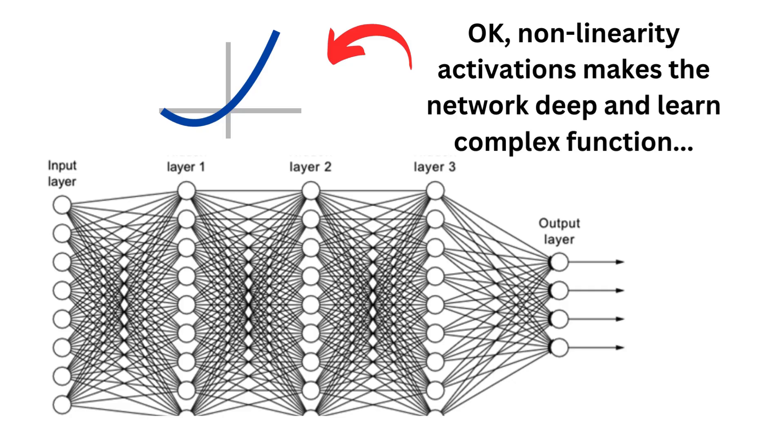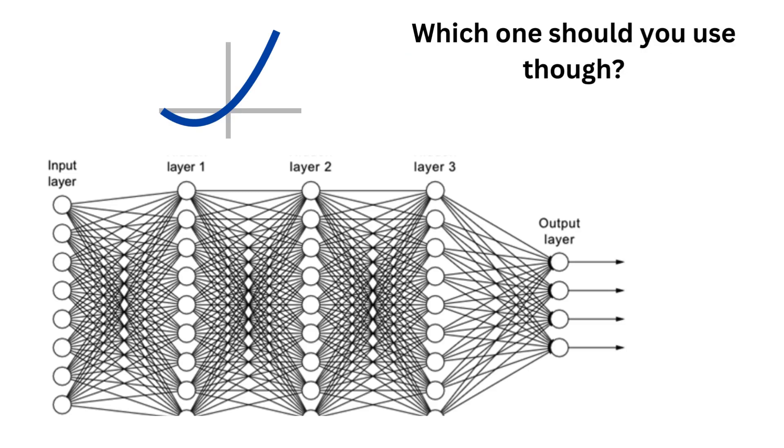Okay, so non-linearity activations make the network deep and learn complex functions. So which one should you use though?